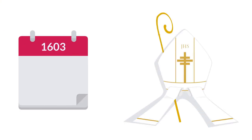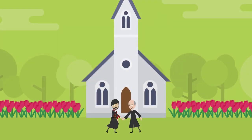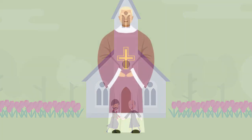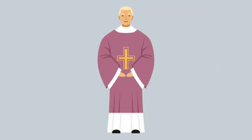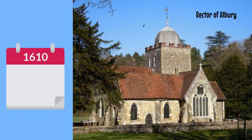In 1603, Oughtred became an episcopal minister, a common and respected career choice. A year later, he applied to the church and got the job as vicar of Shalford. In 1610, he was promoted to a position as rector of Albury.